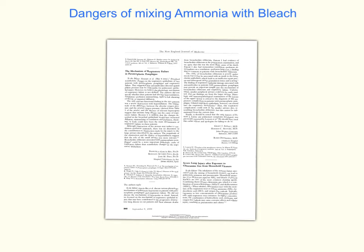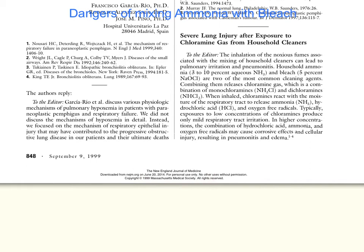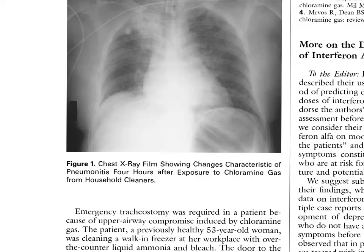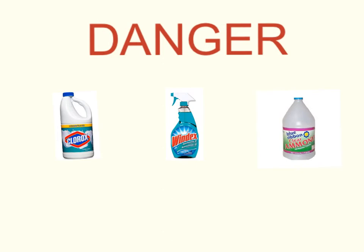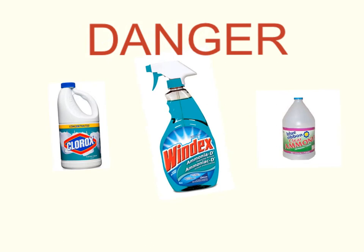Caution must be exercised when handling ammonia. As noted in the New England Journal of Medicine, ammonia (NH₃) must never be mixed with bleach — sodium hypochlorite — as it can cause the release of dangerous chloramine gas, which is a combination of monochloramine (NH₂Cl) and dichloramine (NHCl₂). When chloramine gas is inhaled it reacts with moisture in the respiratory tract, releasing ammonia, hydrochloric acid, and oxygen free radicals in the lungs. Inhaling large amounts can corrode lung tissue, cause inflammation and fluid buildup, and lead to life-threatening airway obstruction. Therefore, never mix Clorox with Windex or ammonia household cleaner.